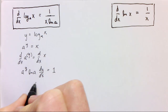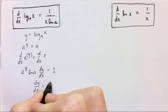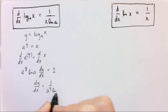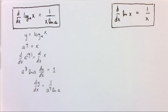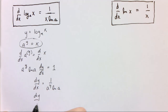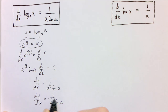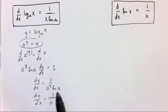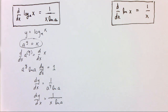So we can solve for dy/dx here: dy/dx equals 1 over a to the y times the natural log of a. But remember we said a to the y was the same as x, so dy/dx equals 1 over x times the natural log of a. This rule seems a little strange because the natural log of a appears, but it's just part of the rule — a small adjustment we have to make when working in bases besides the natural base.